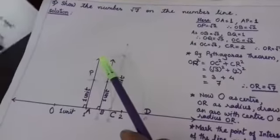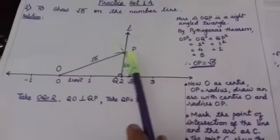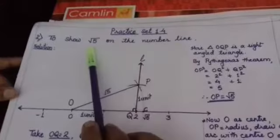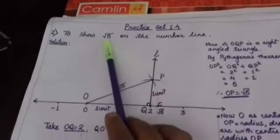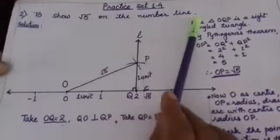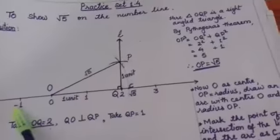That is question number 2. See children, we have already started practice set 1.4 and now here we will show √5 on the number line. How to show? Let us see.